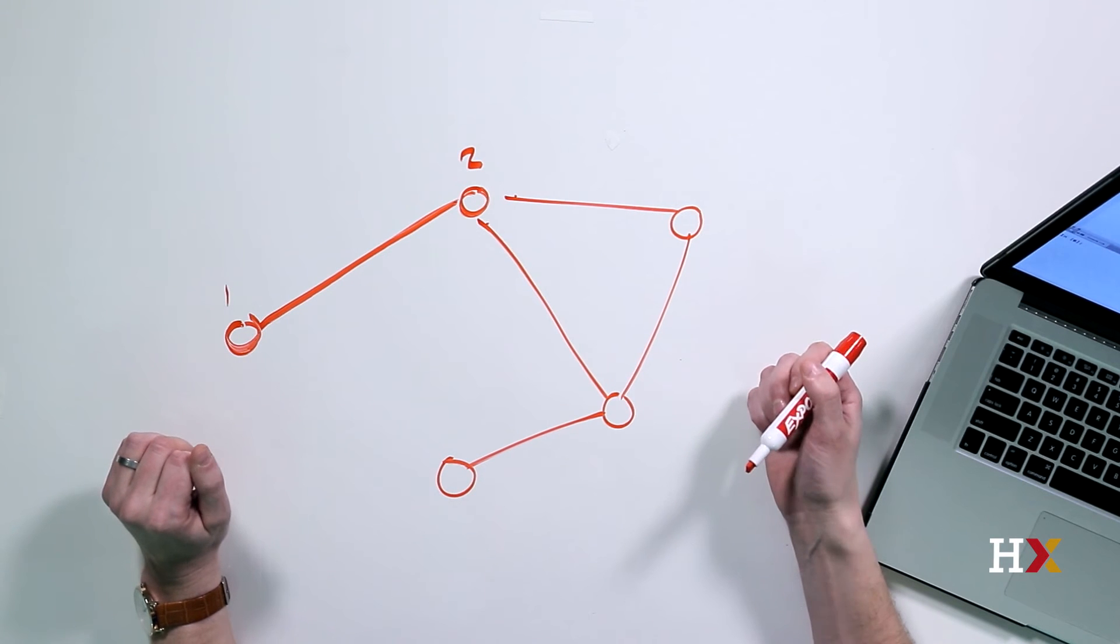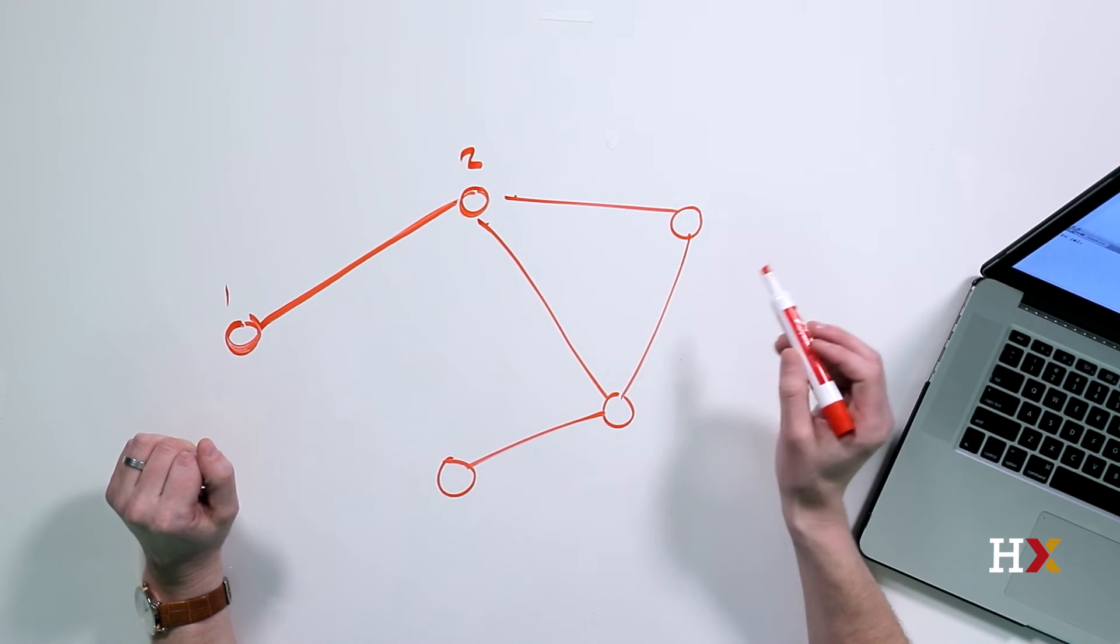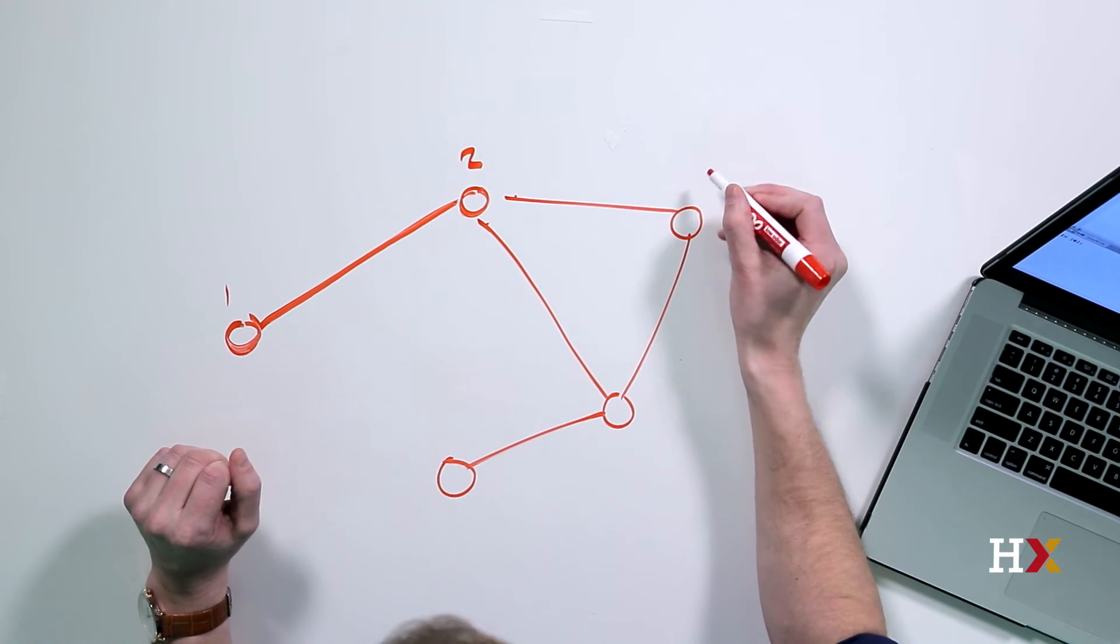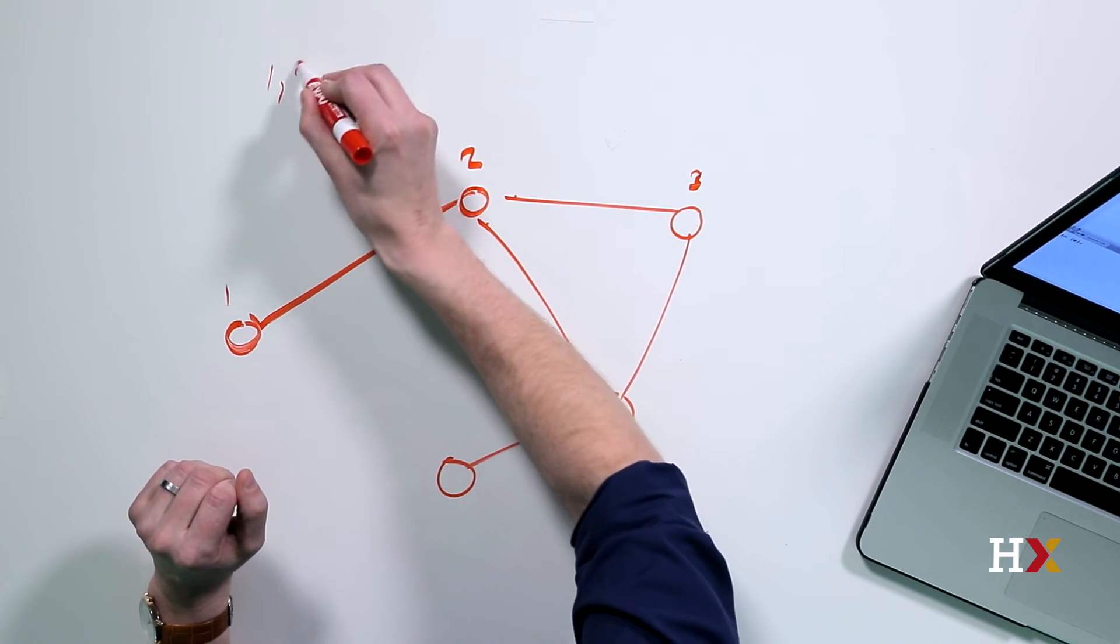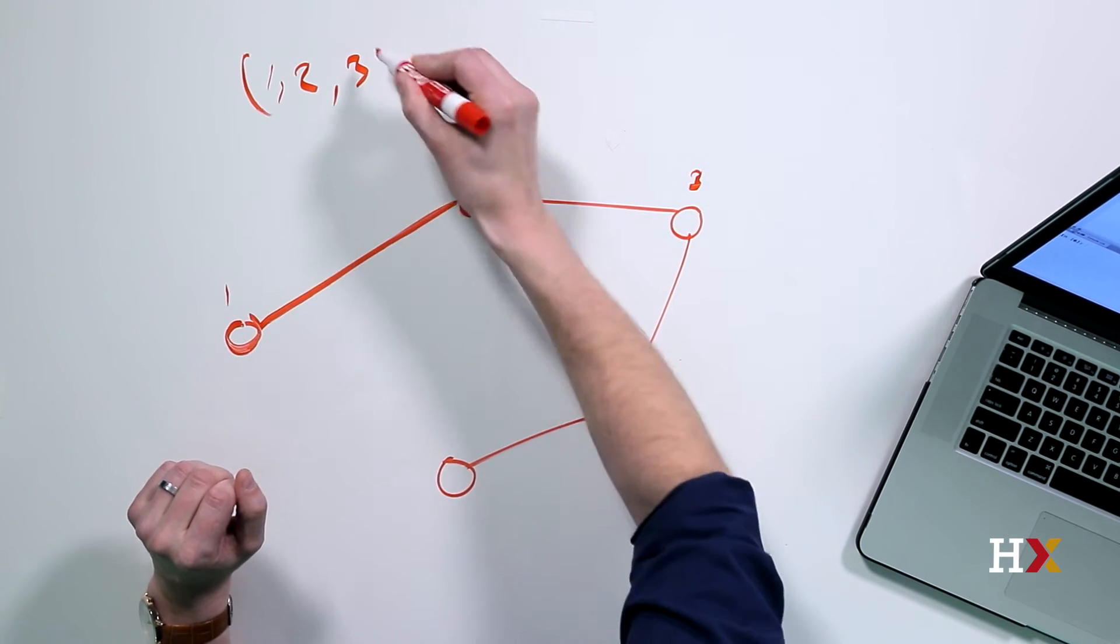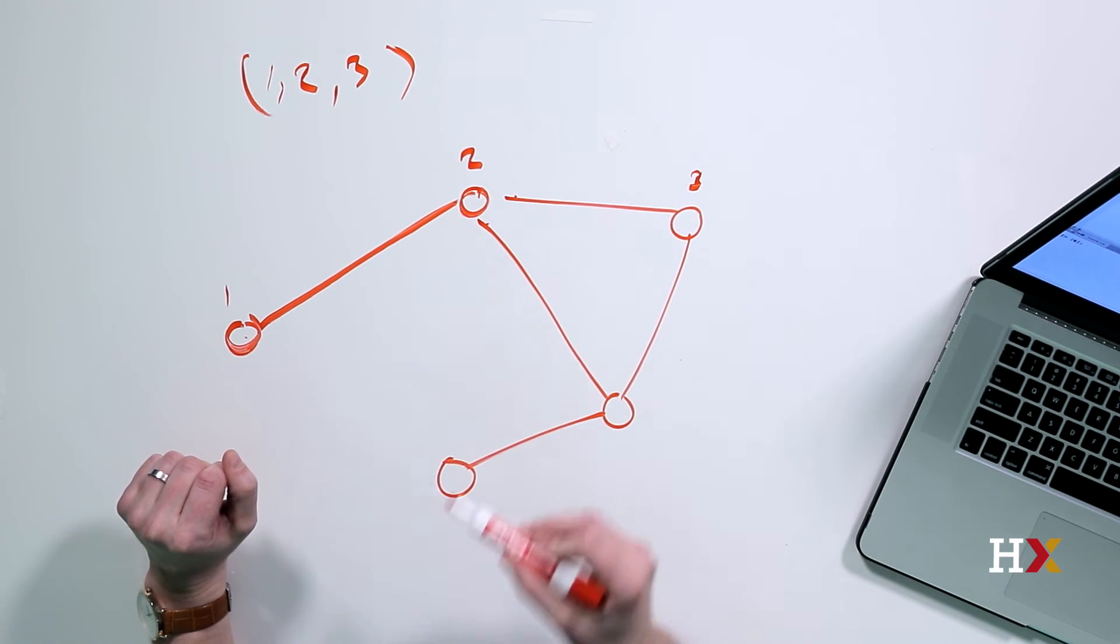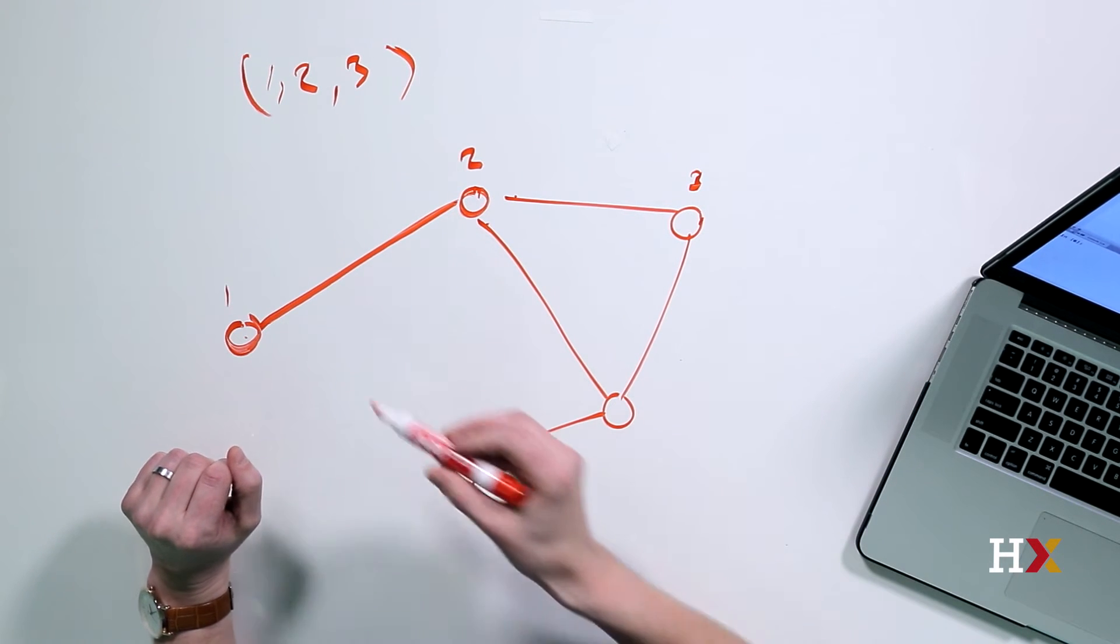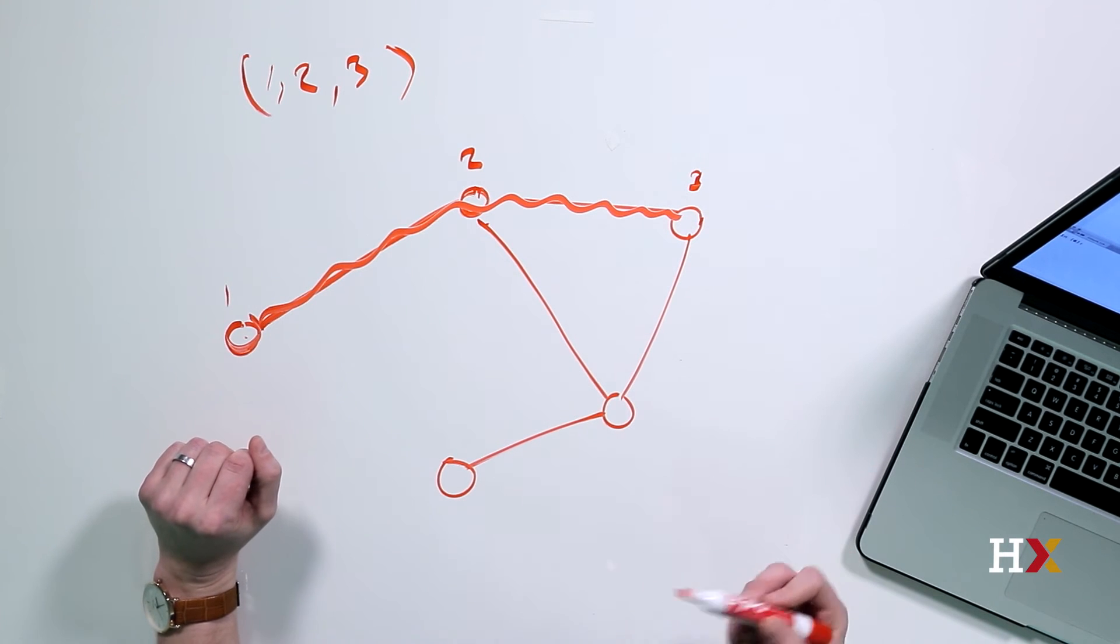A path is a sequence of unique vertices, such that any two vertices in the sequence are connected by an edge. Let's call this vertex three. So a sequence one, two, three would be a path. That's because vertex one and vertex two are connected, and vertex two and vertex three are connected. Intuitively, the path is the path that I've highlighted here.